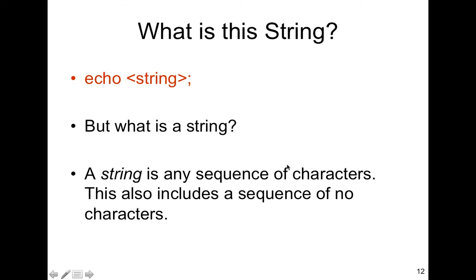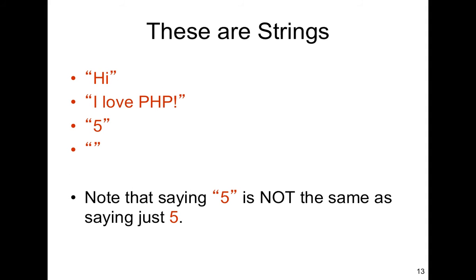A string is a sequence of characters, including numbers or symbols. Hi, I love PHP 5, and something that's empty — they're all examples of strings. Everything's a string. If it's not a string, you have to parse it to something else — like in JavaScript where you parse it to an integer or a float. Saying '5' in quotes is not the same as just saying 5; with quotes it's a string, without quotes it's a number.